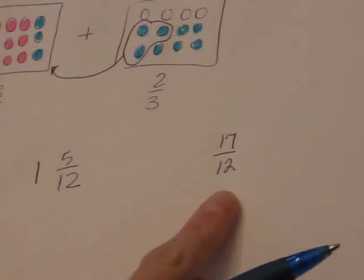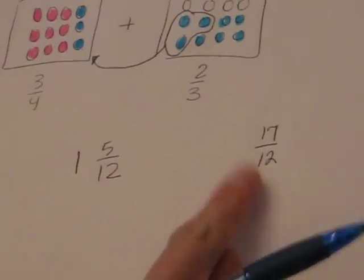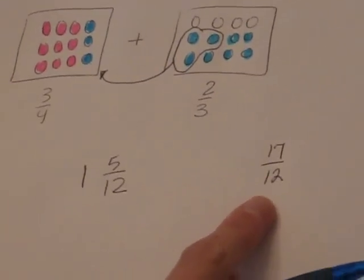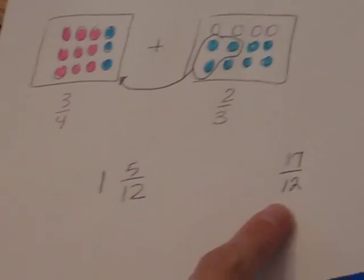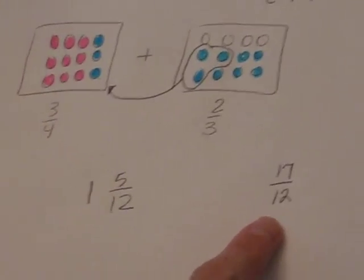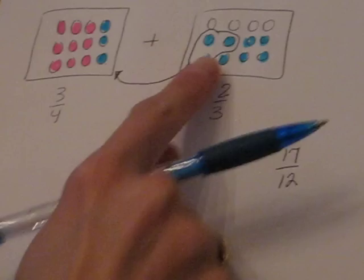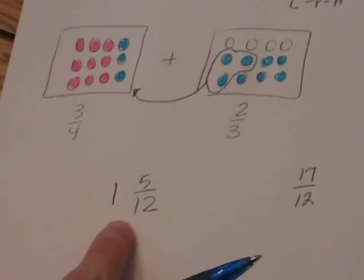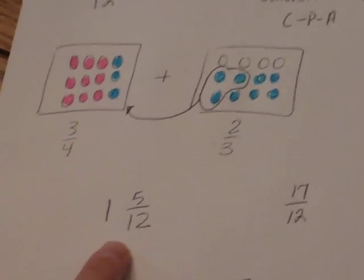If students are giving you these types of answers, these are completely acceptable. Then what you want to do through questioning strategies is ask students, is there any way you can move counters to make a hole? And they will readily say yes. Then you allow them to tangibly move their objects and then progressively you will get them to one and five twelfths.